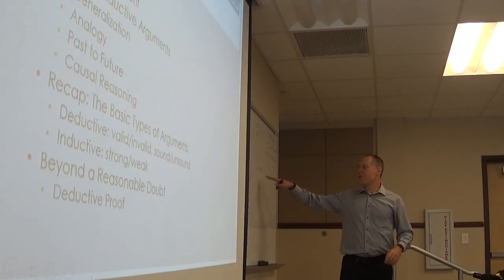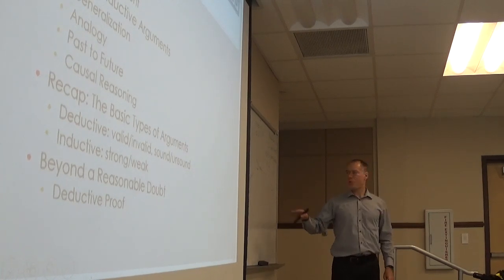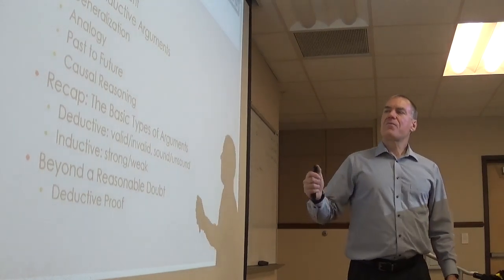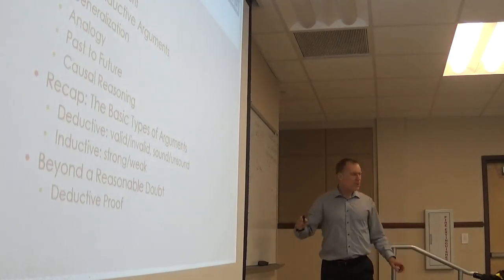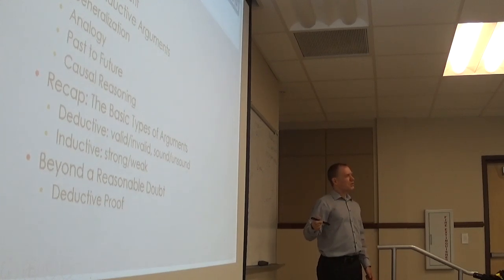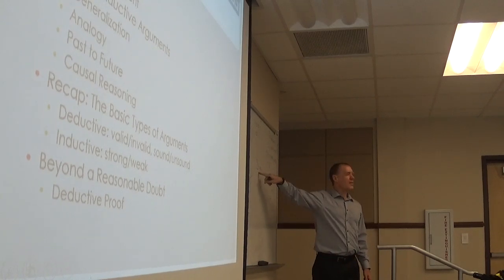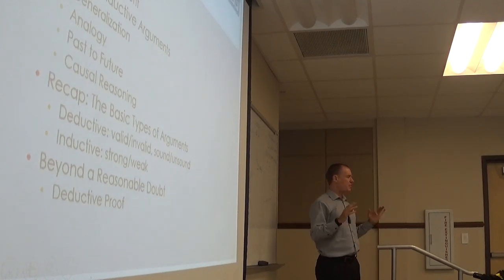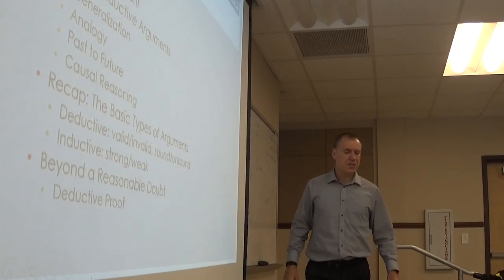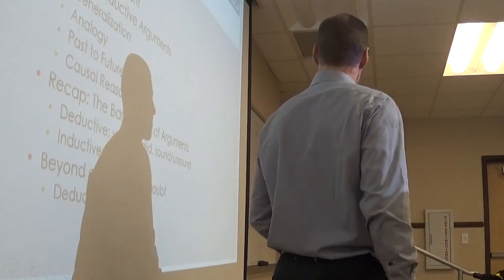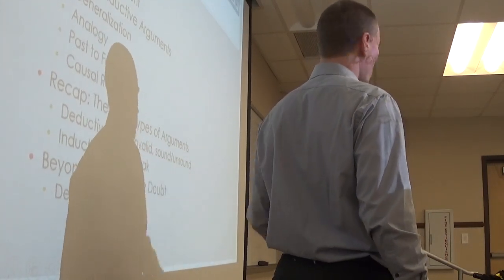Last thing, the book doesn't mention this but I'll add it for free. The inductive equivalent to sound is cogent. Cogent means strong plus it's actually got true premises. Just like with soundness, an argument's cogency may vary from context to context. The strength of an argument is a function of how well the premises support the conclusion, and cogency would be: is it a strong argument with actually true premises? If yes, it would be cogent. And of course there would be degrees of cogency, more or less based on the strength.